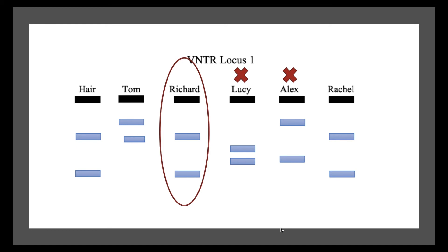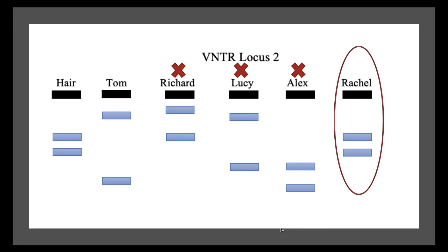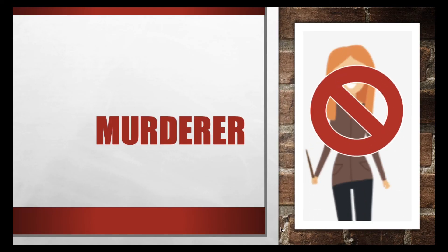Rachel's band also matches with the hair found at the crime scene. Thus, she is also a suspect. From VNTR Loci 1, we eliminated Lucy and Alex, so we do not have to compare their bands at Loci 2. From VNTR Loci 2, we can eliminate Richard from being a suspect, as his bands do not match with the DNA found at the crime scene. Rachel's band, on the other hand, matches the DNA found at the crime scene. Since Rachel's band matched with the hair found at the crime scene at both loci, we conclude that Rachel robbed the store and murdered Tom.